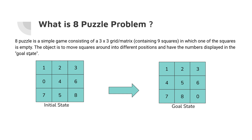The objective is to move squares around into different positions and have the numbers displayed in the goal state. We have 0 and all numbers from 1 to 8. We need to place 0 to its adjacent positions — 0 can be placed on the position of 4, on the position of 1, on the position of 7, and to the left side as well. The possible moves are left, right, top, and bottom.